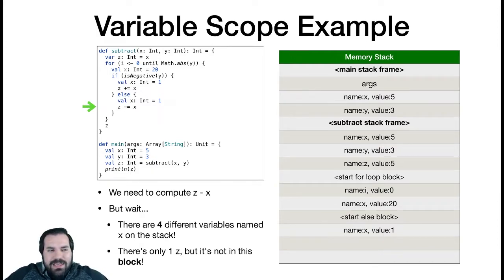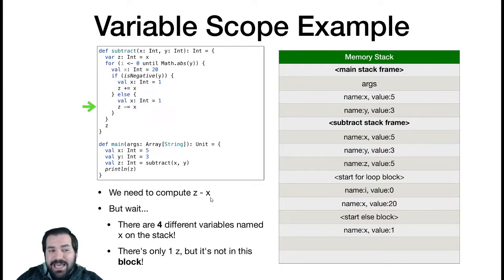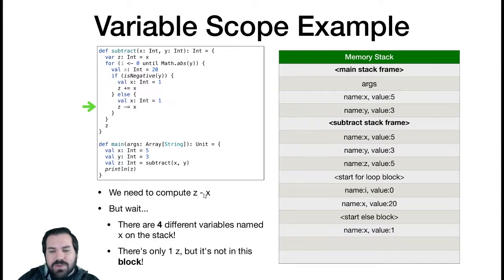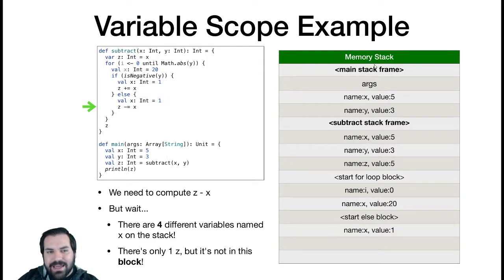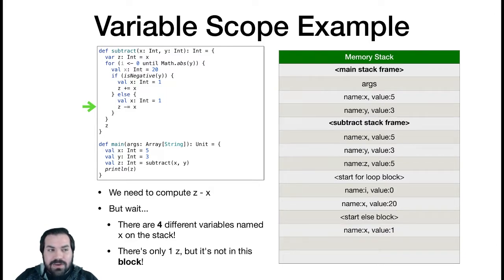Now we reach the interesting line: z minus-equals x, or equivalently z equals z minus x. We have to compute z minus x. So we need to ask: what does z resolve to, and what does x resolve to? We have four different variables named x on the stack, and one variable named z — but it's not in the current block. What values will Scala grab for each of these variables? This is what variable scoping is all about.